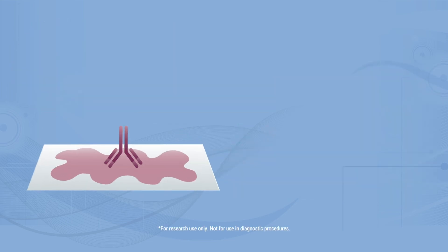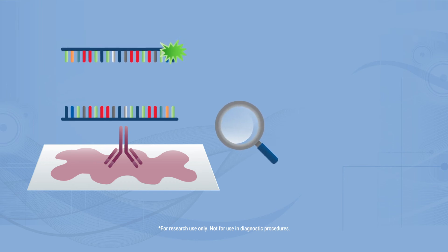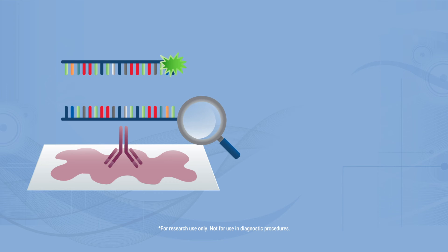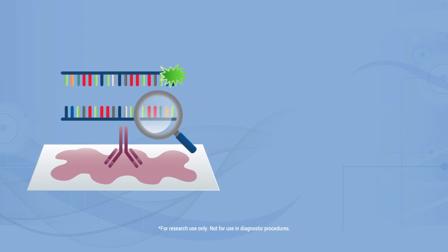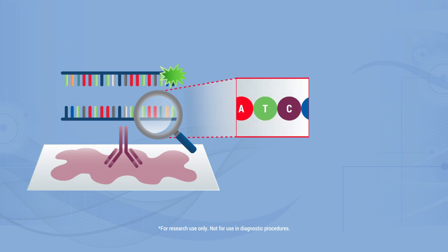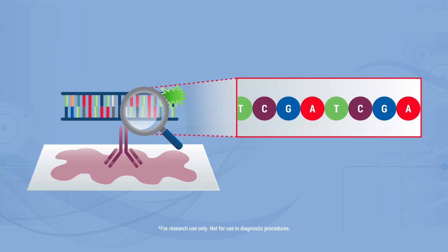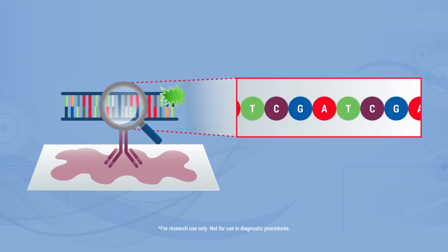Some multiplex technologies have overcome this issue by labeling primary antibodies with short oligonucleotide sequences that are detected with complementary secondary antibodies or fluorophore-conjugated oligonucleotide probes. As the nucleotide code is redundant, this opens many possibilities for the number and combination of primary antibodies used in a multiplex assay.